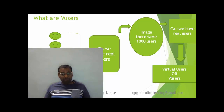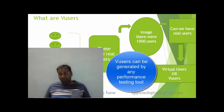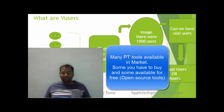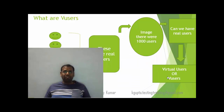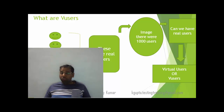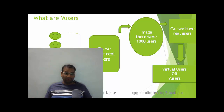V-users can be generated by any performance testing tool. There are a lot of performance testing tools out there, and all of them have the capability to create these v-users or virtual users. The popular tools include LoadRunner or Performance Center, StormRunner, Rational Performance Tester, JMeter, NeoLoad — which is becoming popular these days — WebLoad, and OATS, Oracle Application Testing Suite. There are also many other open source tools, and all of them have the capability to create virtual users or v-users.